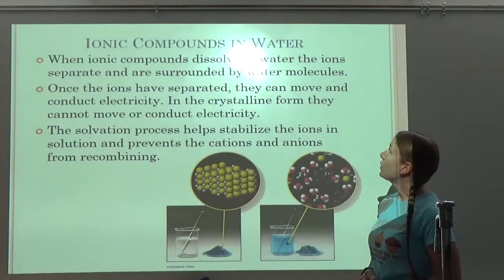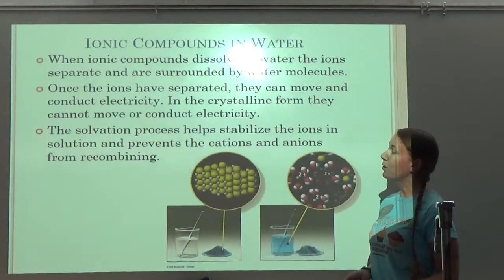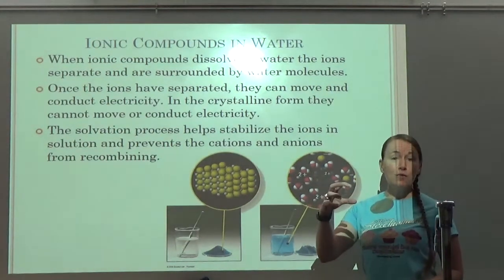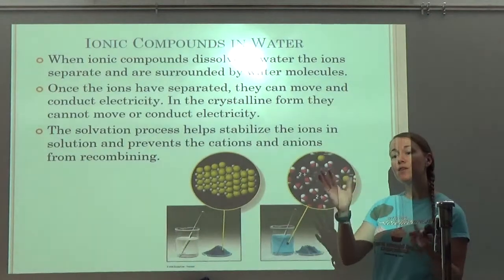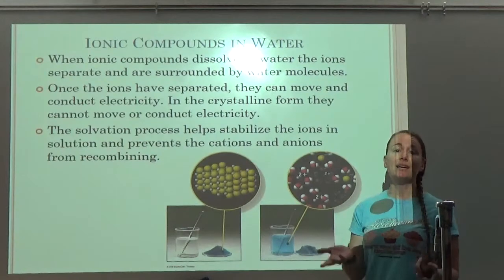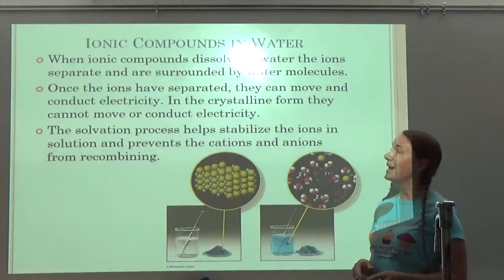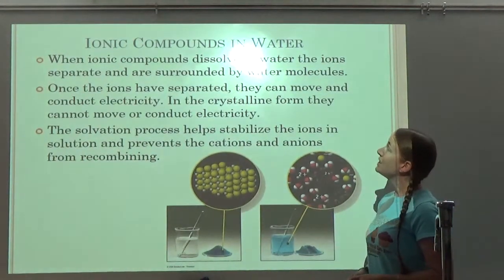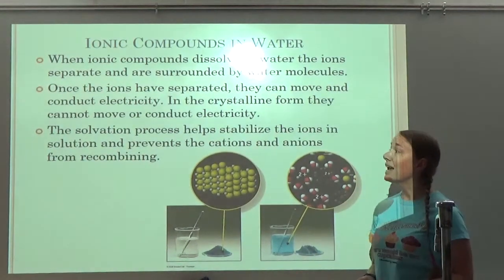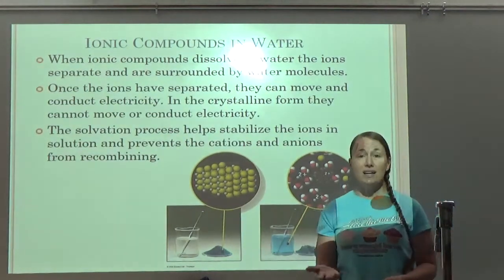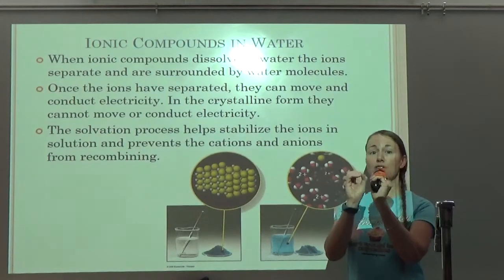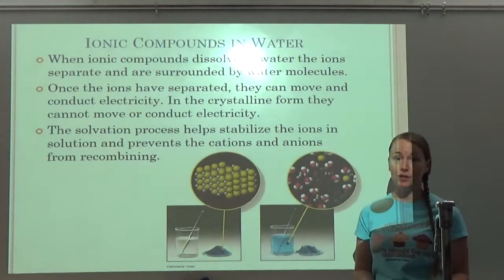When ionic compounds dissolve in water, the ions separate and are surrounded by water molecules. The oxygen side of water, because it's more electronegative, will face towards a positive ion, whereas the hydrogen sides of water, because they are partially positive, will be attracted to a negative ion. Once ions have separated, they can move and conduct electricity. In the crystalline form, they cannot move or conduct electricity. Solid salt — the sodium and chloride ions are trapped in fixed locations, just vibrating, so solid salt cannot conduct electricity.